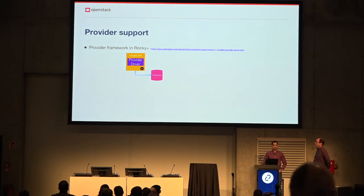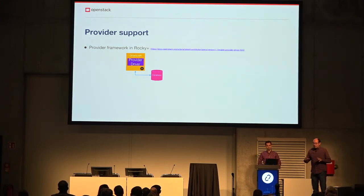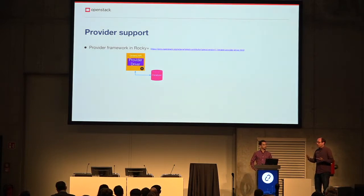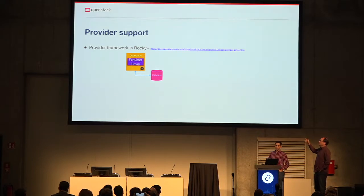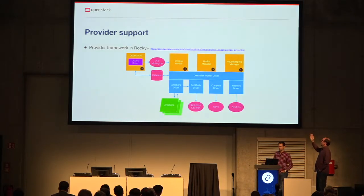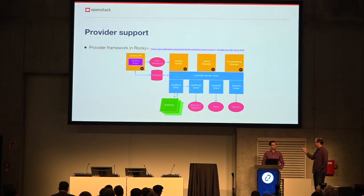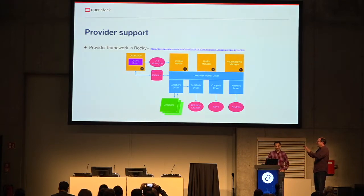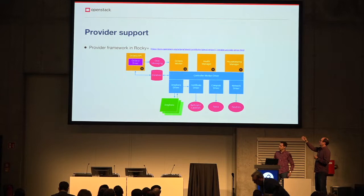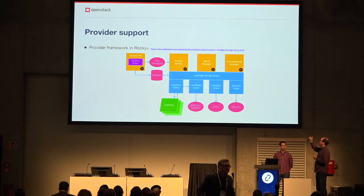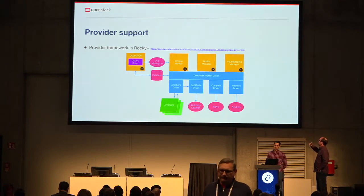We needed to get provider support right before we could deprecate Neutron LBaaS. We now support providers in Octavia. The Octavia API server has a provider driver which can be anything. The architecture uses what we call the Amphora driver — we renamed it from 'Octavia driver' in Rocky or Stein — so it's no longer 'Octavia the project' versus 'Octavia the driver.' We wrote our own Amphora driver, which goes in alongside the Octavia worker.